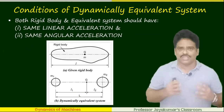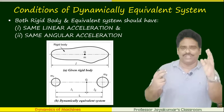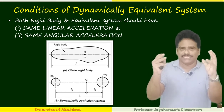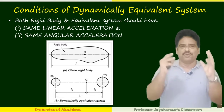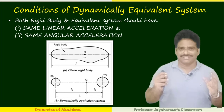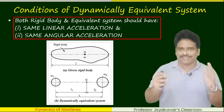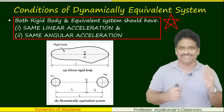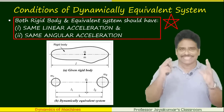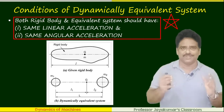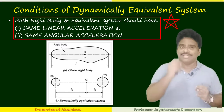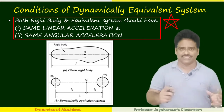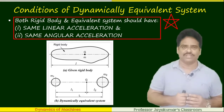How do we replace it? When can we say both the actual rigid body and the dynamically equivalent system are equivalent? Only when both have the same motion. The connecting rod will have linear motion as well as angular motion. So we can say both are equivalent only when they have the same linear acceleration as well as the same angular acceleration. That is the logic. Using that logic, we are going to derive the conditions.